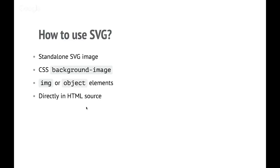There are a number of ways to actually use SVG. You can have just a standalone SVG image that will render in any browser. You can use it through CSS as a background image the way that people use CSS sprites. You can use an image element in HTML, use an object element in HTML. From HTML5 onwards, you can include SVG directly as part of your source code.